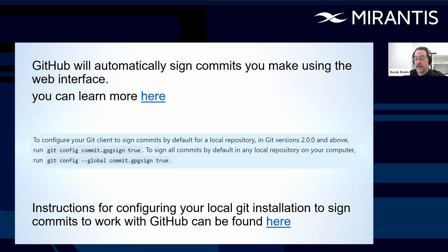Something not necessarily well known is that GitHub will automatically sign commits that you make using the web interface. If you don't use the Git CLI and instead commit directly from the web interface, GitHub will automatically sign those commits because you had to sign into GitHub, so it knows who you are. Instructions for configuring your local Git installation to sign commits can be found in the linked documentation. It's basically just a couple of simple commands, and then all your commits will be signed from that moment onwards.